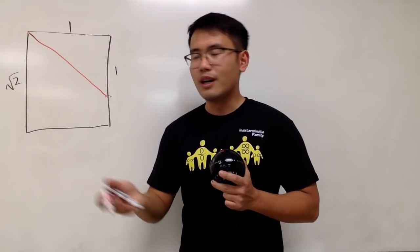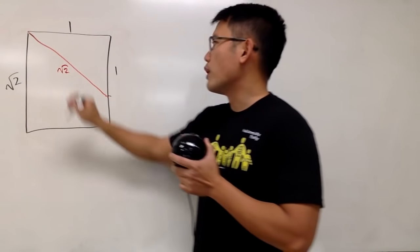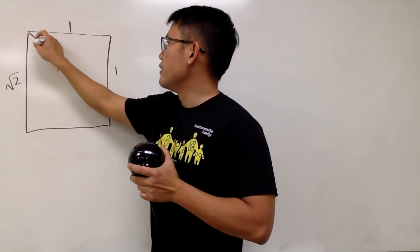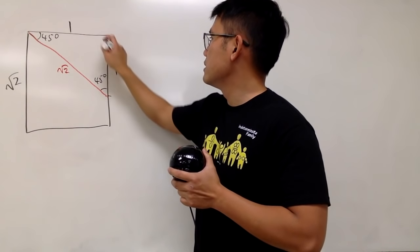And of course, this is just a typical 1, 1, square root of 2 special right triangle. And of course, this and that will be just 45 degrees. That's nice. And of course, this is the 90.